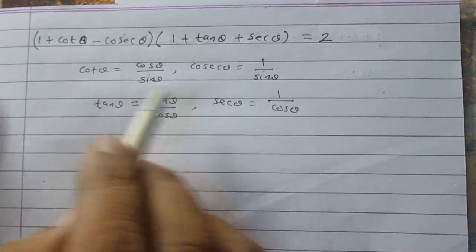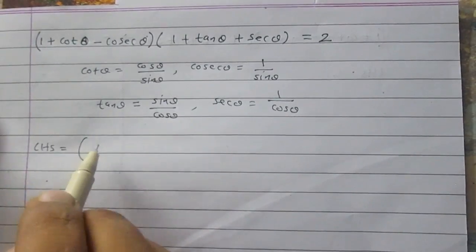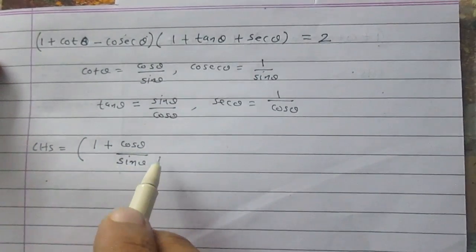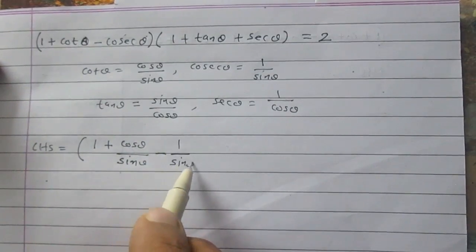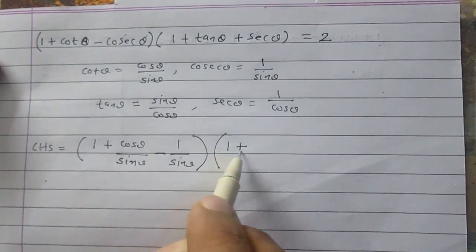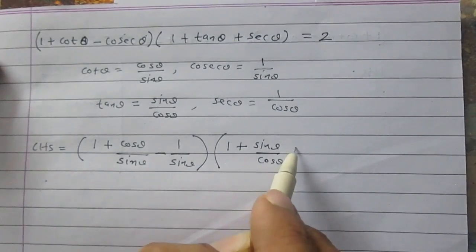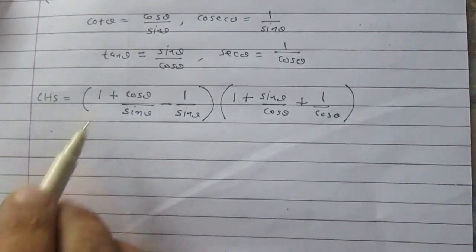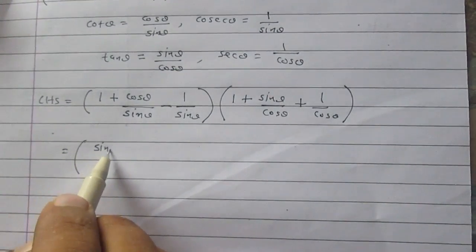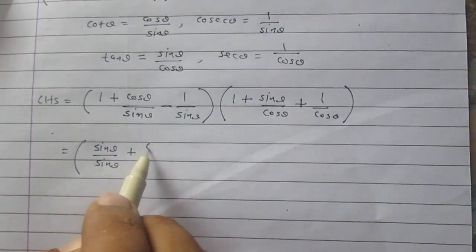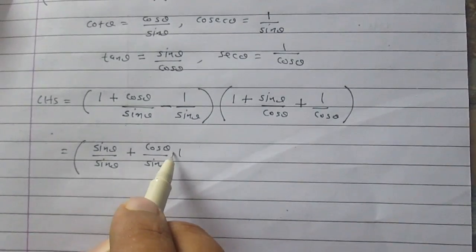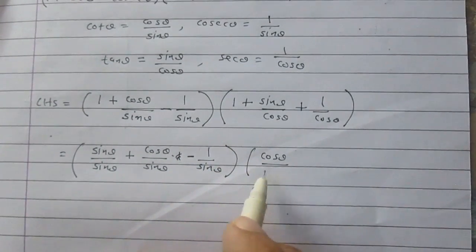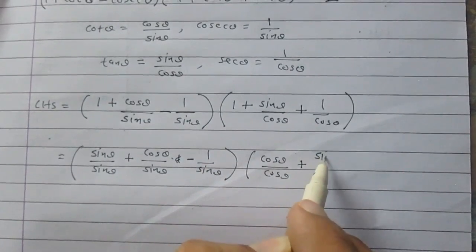Using these four identities, we can write the LHS as (1 + cos θ / sin θ - 1 / sin θ) multiplied by (1 + sin θ / cos θ + 1 / cos θ). Rearranging, the first part becomes sin θ / sin θ + cos θ / sin θ - 1 / sin θ, and the second part becomes cos θ / cos θ + sin θ / cos θ + 1 / cos θ.